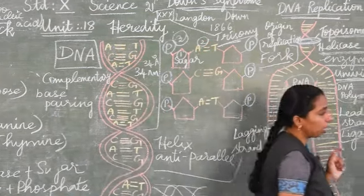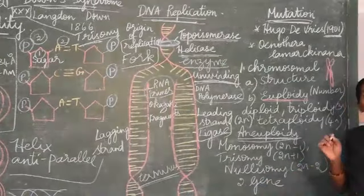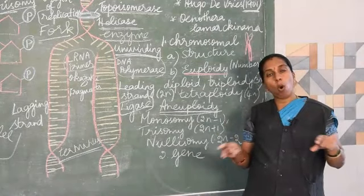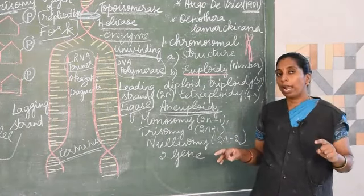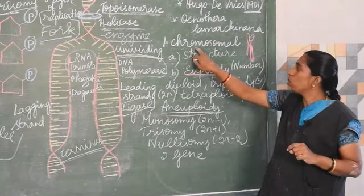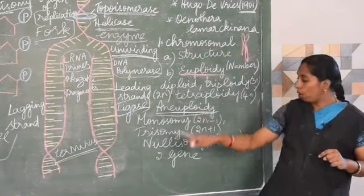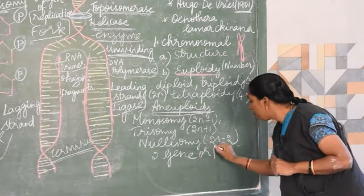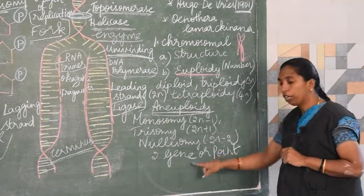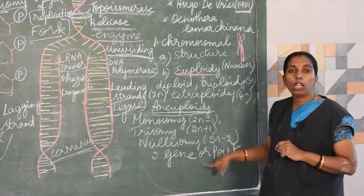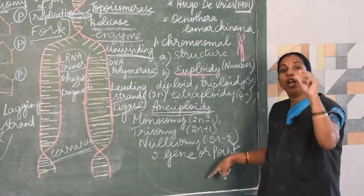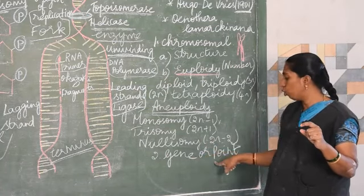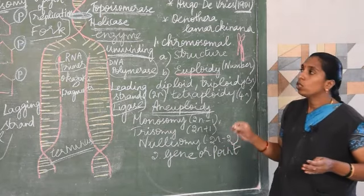The second type of mutation is gene mutation or point mutation. Gene or point mutation can be seen at the nucleotide level of the chromosome.